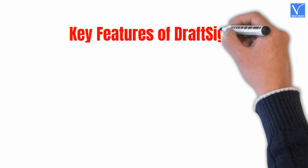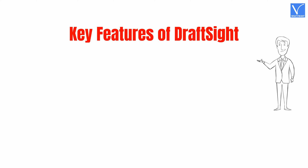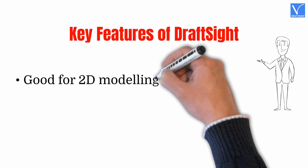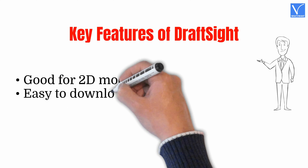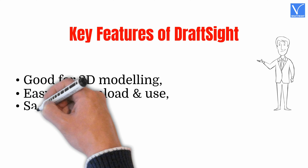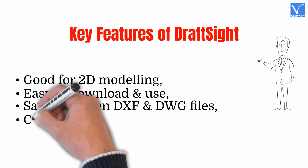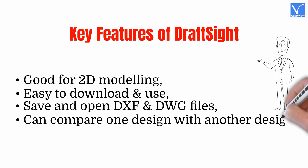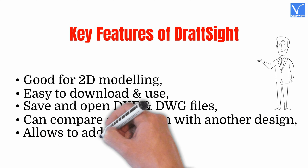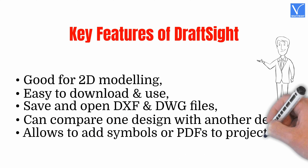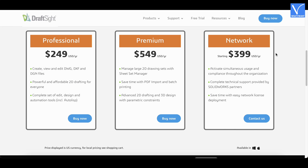Key features of DraftSight: Good for 2D modeling; easy to download and use; save and open DXF and DWG files; can compare one design with another; allows you to add symbols or PDFs to a project file. Pricing: DraftSight is available in 3 plans — Professional, Premium, and Network.